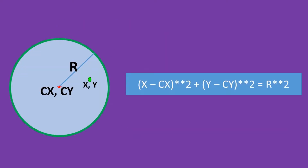So now, the idea is to compute the distance of the point from the center of the circle in order to determine if the point is within the circle or not. For this, we consider the equation of the circle with center Cx, Cy and radius R, which is: (x − Cx)² + (y − Cy)² = R², where x and y are the coordinates of the point. If the distance is less than or equal to the radius, the point is inside the circle; if the distance is greater than the radius, the point is outside the circle.